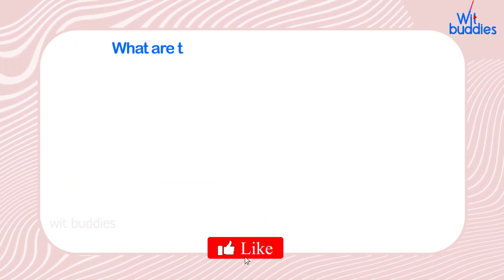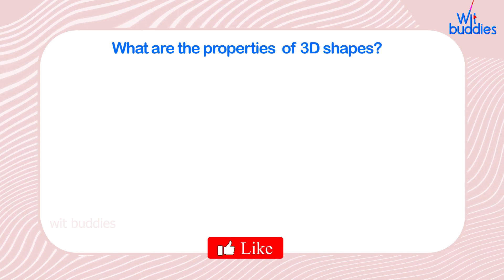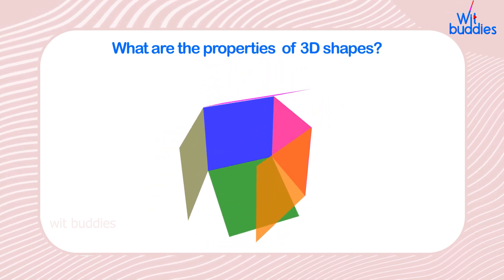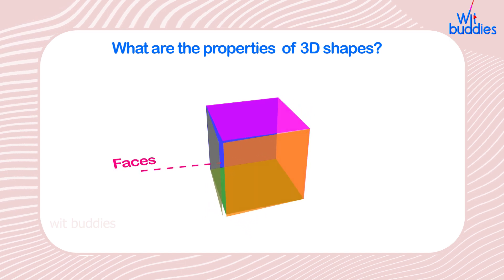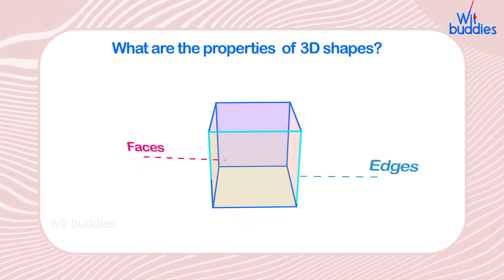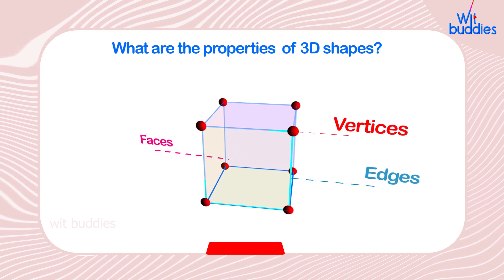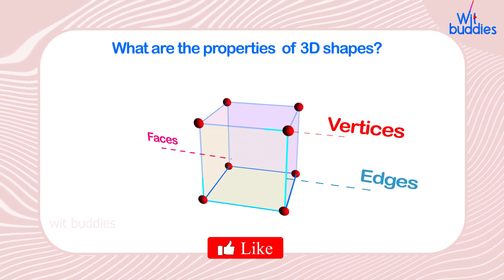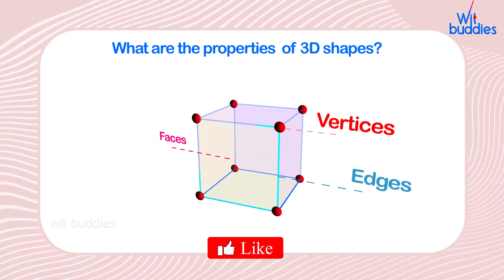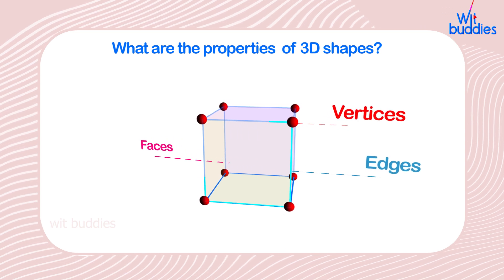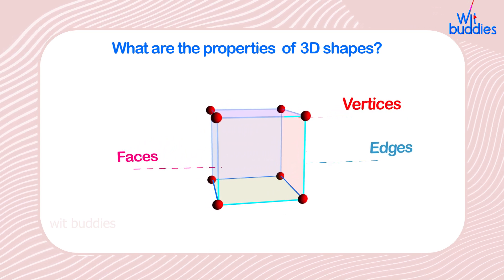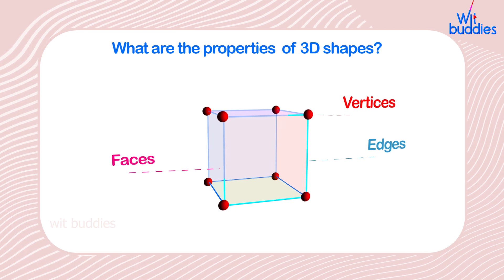What are the properties of 3D shapes? The properties of 3D shapes are based on their faces, edges, and vertices. Faces, edges, and vertices are three important measures of 3D shapes that define their properties.